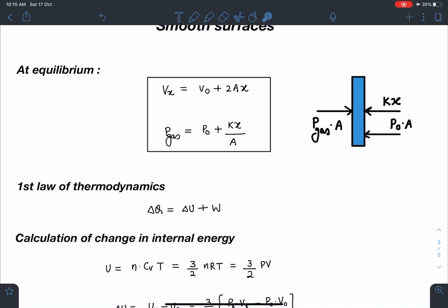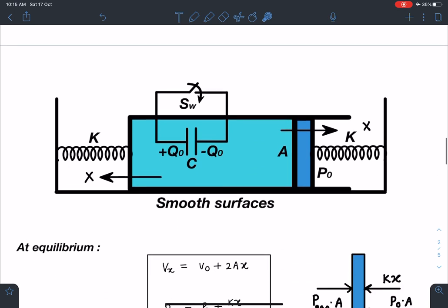If you see, I can write internal energy as nCvT, so it will become n times 3 by 2, that will become nRT, and nRT value I can substitute as PV. If you see here, initially springs were relaxed, so P_gas must be P0 in the beginning.